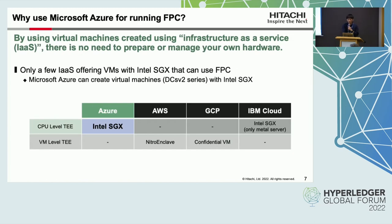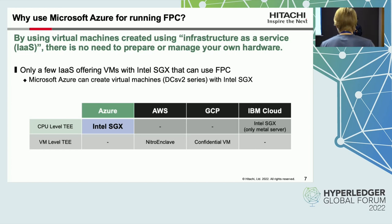I'll explain why we chose Microsoft Azure for running Fabric Private Chain Code. By using virtual machines created using infrastructure as a service, there is no need to prepare or manage your own hardware. However, only a few infrastructure as a service providers offer virtual machines with Intel SGX that can use Fabric Private Chain Code. Microsoft Azure can create virtual machines with built-in Intel CPUs that support Intel SGX.